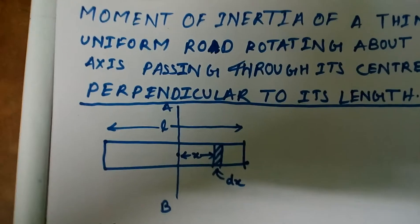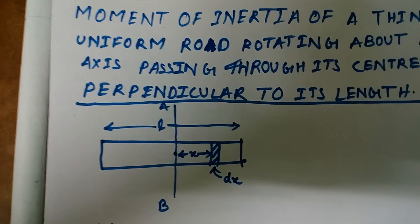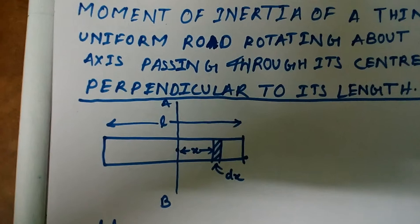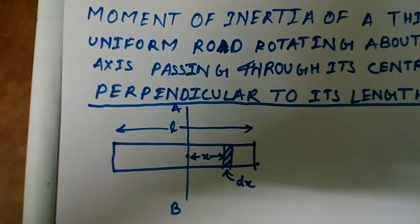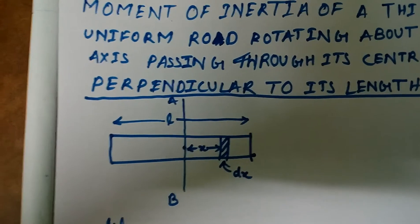Let us suppose an elementary portion dx, elementary length dx at a distance of x from the center. So, we need to calculate the moment of inertia of the rod about the axis AB.